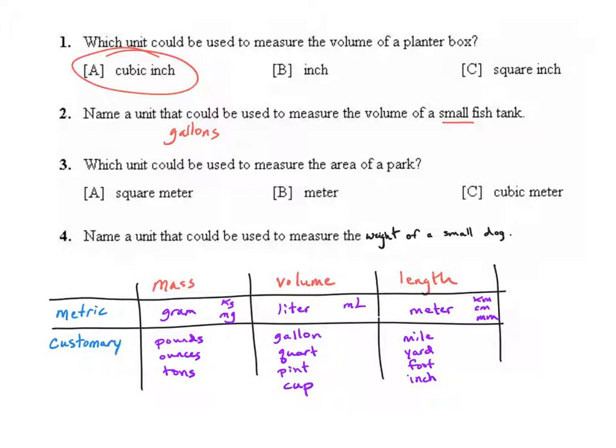Question three says which unit could be used to measure the area of a park? Area is a two-dimensional space. It's the amount of space that an object covers and we would use these units of length again but we'd use them in two dimensions. If we look at the answer choices, choice B is one-dimensional which means it might be used to measure the perimeter of the park when we're just measuring the distance around it and choice C is three-dimensional so it would be used to measure the volume of something.